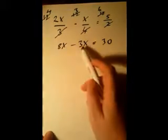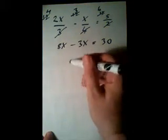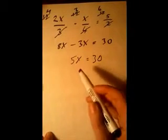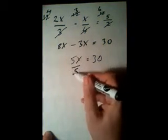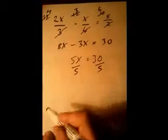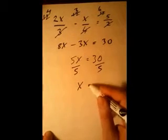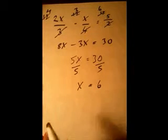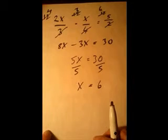So we have 8x minus 3x equals 30. 8x minus 3x is obviously 5x, which equals 30. Now all we have to do is get rid of the 5 by dividing both sides by 5, leaving X equals 30 divided by 5, which is 6. So there we've solved that equation.